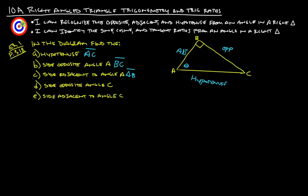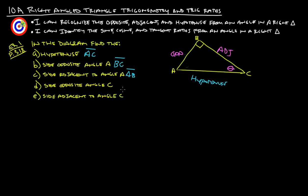Now, if we're talking about angle C, that's a different story. The angle has changed, and the side across from it now becomes the opposite side. This is still the hypotenuse, but now this side here is the opposite side, and this side is the adjacent. So, the side opposite angle C is AB, and the side adjacent to angle C is BC.